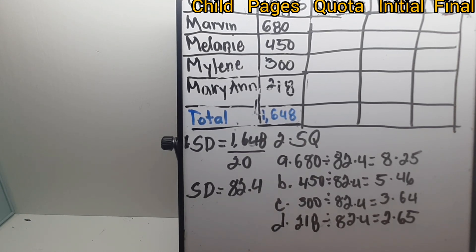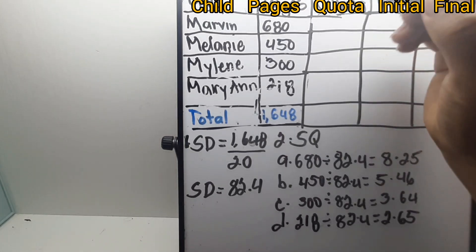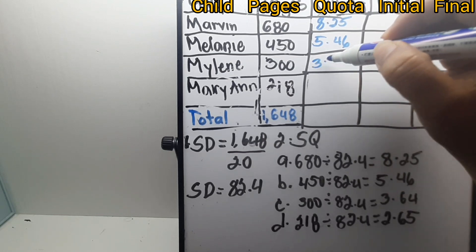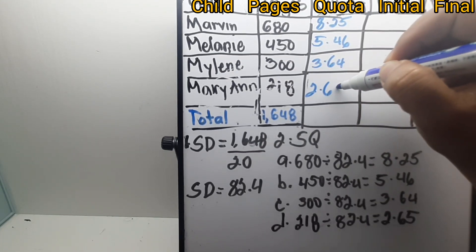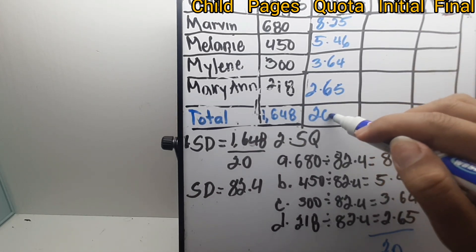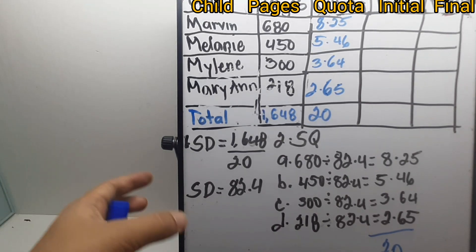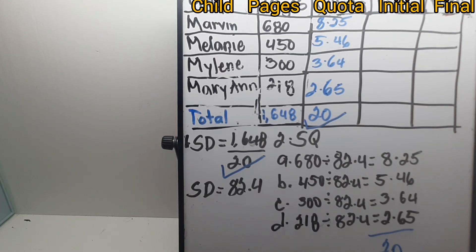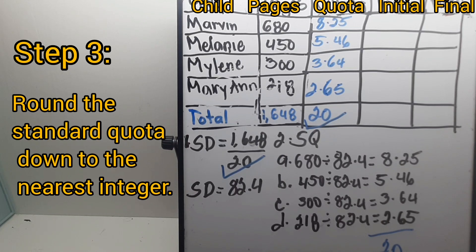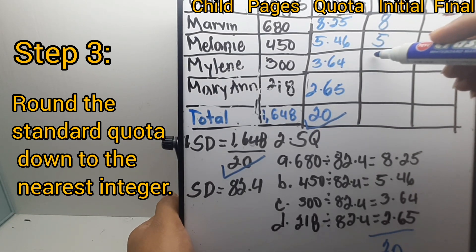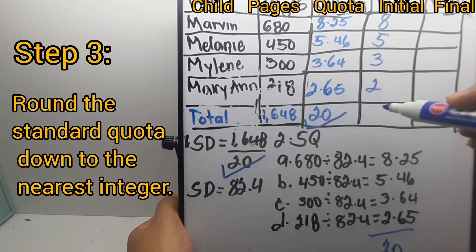Placing the answers in the table: Marvin has 8.25, then 5.46, 3.64, and 2.65, with a total of 20. To check that your answer is correct, the total quota should equal the total number of apportionment. Step three is to round the standard quota down to the nearest integer or lower quota: 8, 5, 3, and 2, with a total of 18.